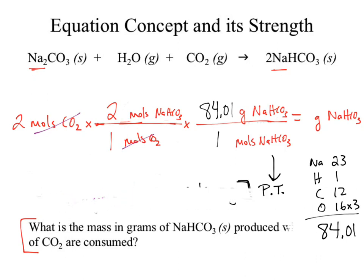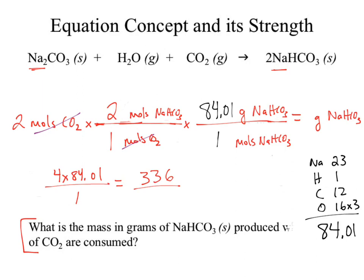As far as entering it into the calculator, I take everything in the numerator and multiply it through. For instance, 2 times 2 — I'm pretty good at that one, it's 4 — times 84.01, divided by 1 times 1 times 1, which is 1. So 4 times 84 is 336. That's my numerator; the denominator came out to be 1. So 336 divided by 1 gives my answer of 336 grams of sodium hydrogen carbonate. Now I'd have to go back and evaluate sig figs.